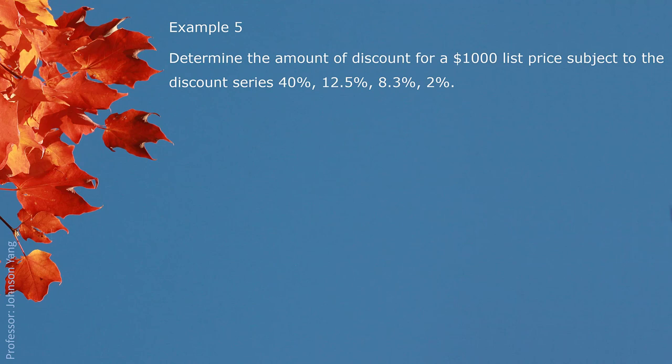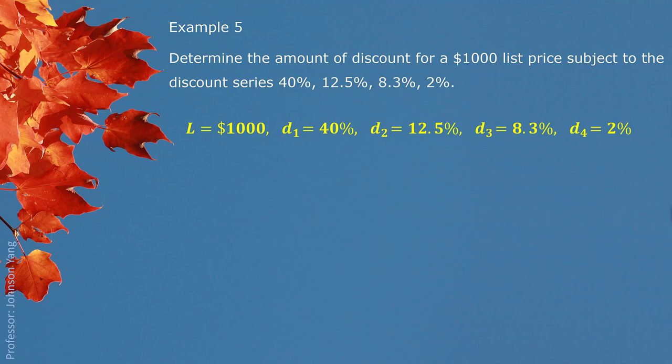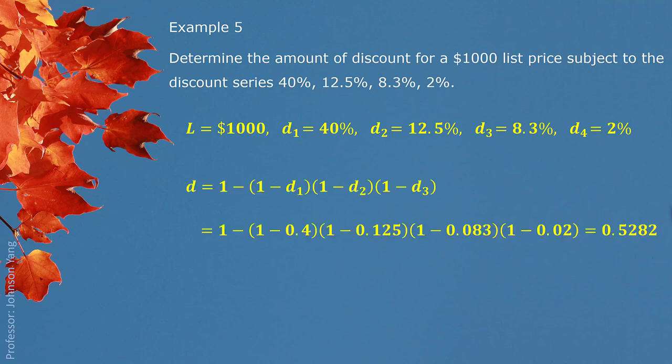Example 5. Determine the amount of discount for a $1000 list price subject to the discount series 40%, 12.5%, 8.3%, 2%. We have the list price and the rates of discount. We can calculate the single equivalent rate of discount using the formula, and with that single equivalent rate of discount we can directly calculate the discount in dollars: the original list price of $1000 multiplied by the single equivalent rate of discount gives us a discount of $528.20.